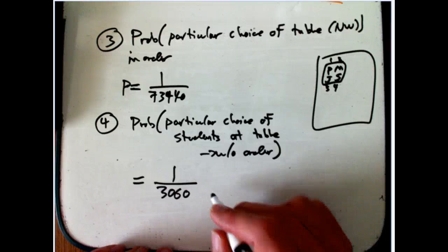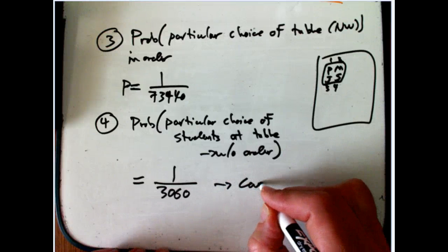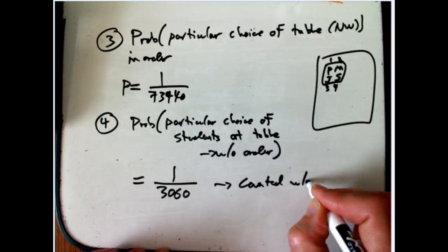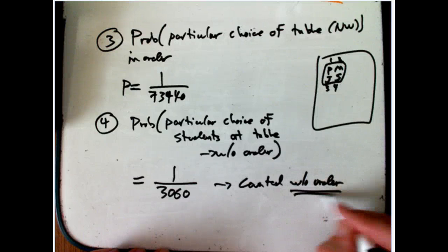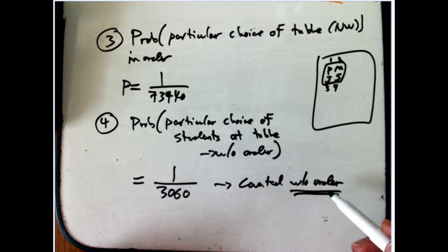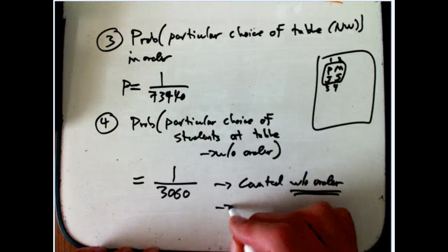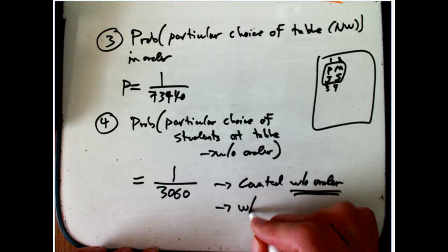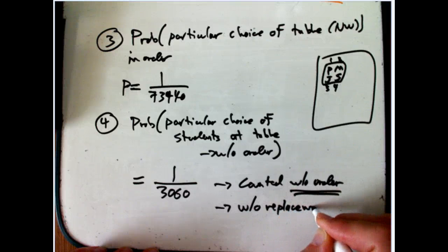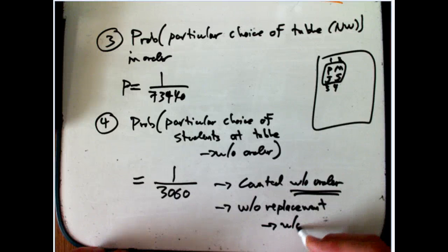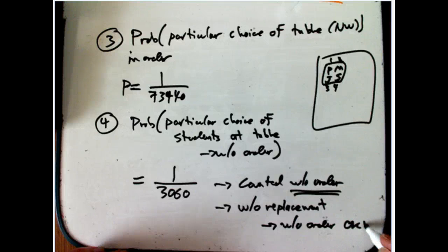Now there's a very dangerous thing here. We counted this without order, and the question is, is it just that we don't care about the order, or can we really accurately count without the order? And the principle here, it's a basic principle, is that because this is without replacement, that means we can count without order, as long as we don't care about it.